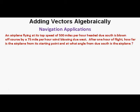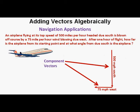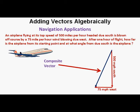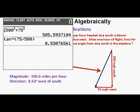Next problem: an airplane flying at its top speed of 500 miles per hour headed due south is blown off course by a 75 miles per hour wind blowing due west. After one hour of flight, how far is the airplane from its starting point and at what angle from due south? I invite the viewer to pause and work out this problem. The resultant vector's magnitude is about 505.6 miles per hour, and its direction is 8.53 degrees west of south.